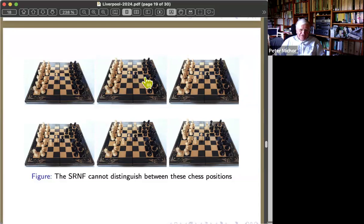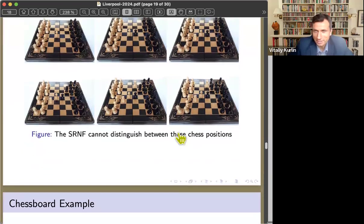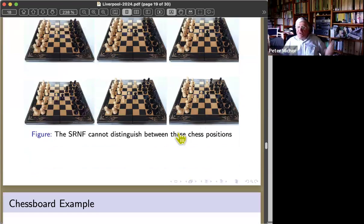Now you move a figure here and here, you move a figure, but then you can find a diffeomorphism which is the identity almost everywhere. But where you move the figure, you just catch this movement with this volume preserving and with transporting along the normal field. Therefore, the square root normal form cannot distinguish between these two chess positions or any of them. All six have the same square root normal form. But if you remove one figure, of course it has a different one.